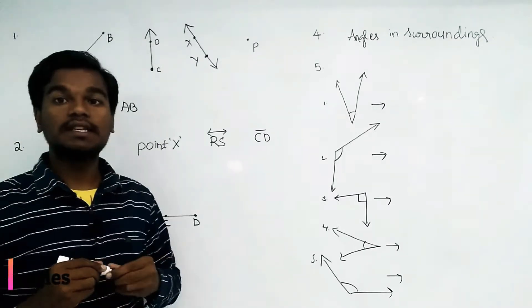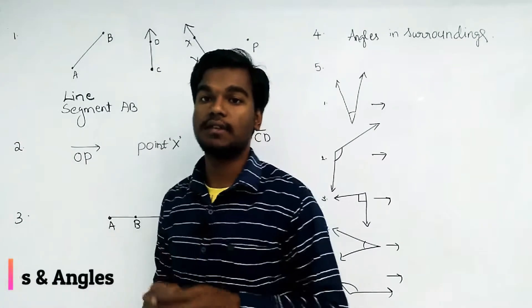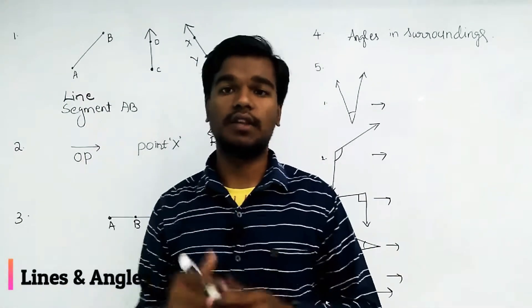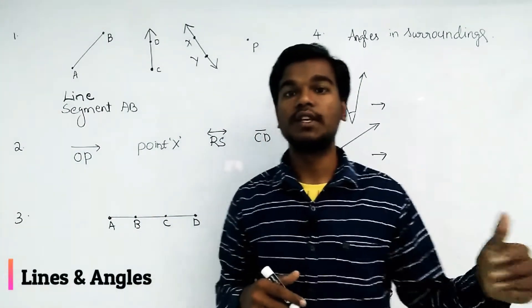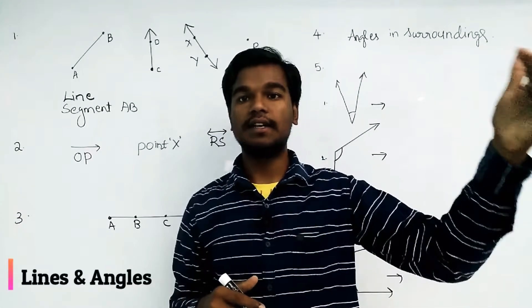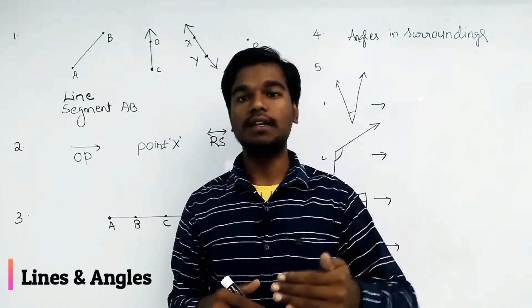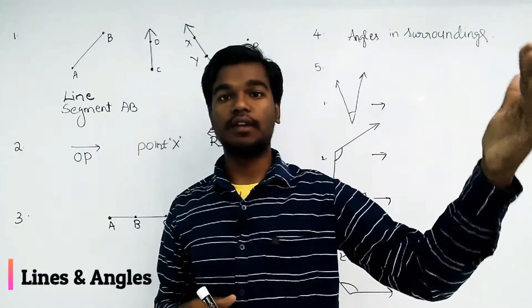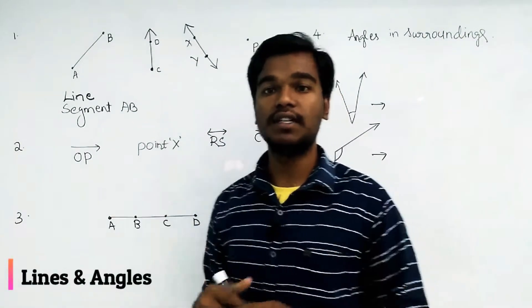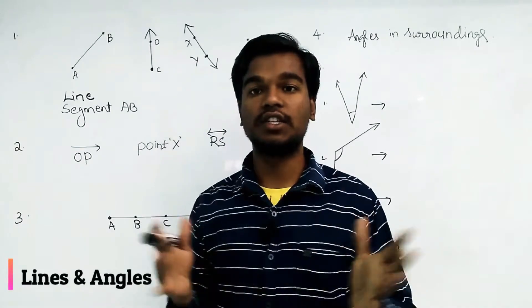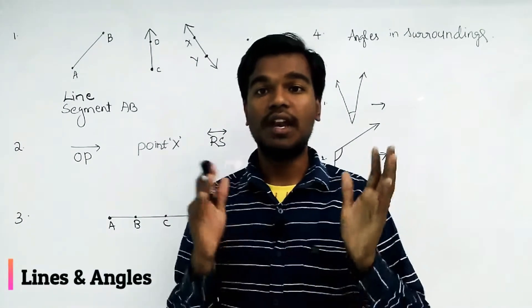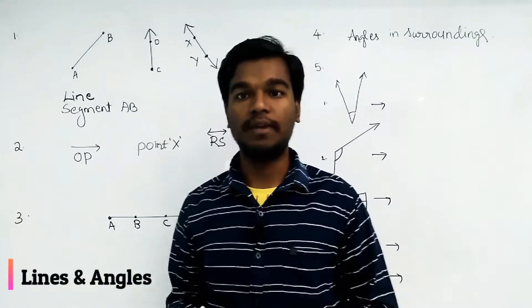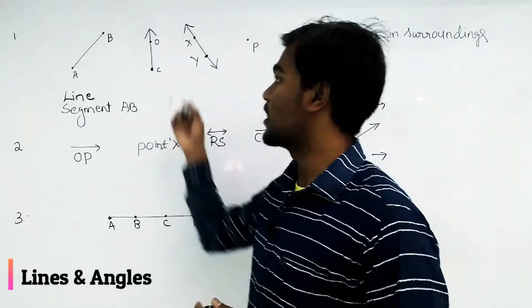The next type starts at one point and goes somewhere — this type of line is called a ray. A ray always starts at one point and goes somewhere without ending. The best example is sun rays: the sun is the source, and the rays travel from the sun to the earth. Light scattering from a bulb is also a good example of rays.